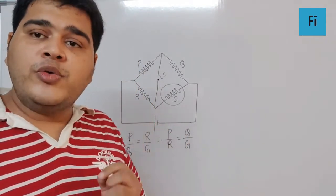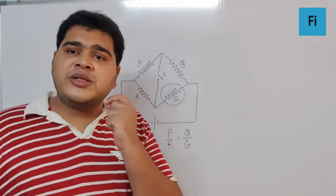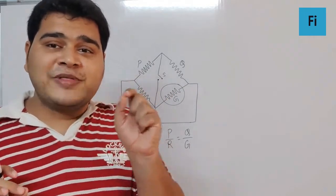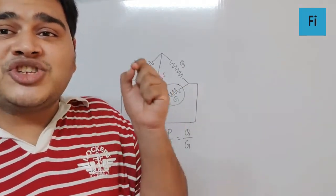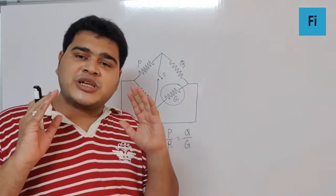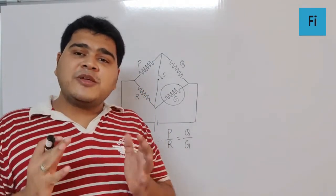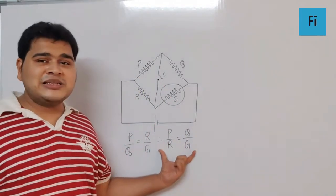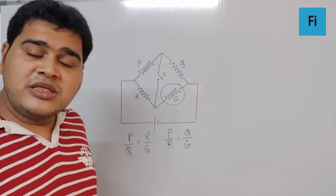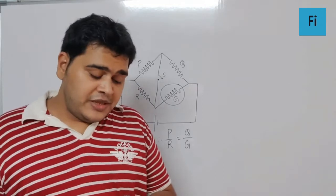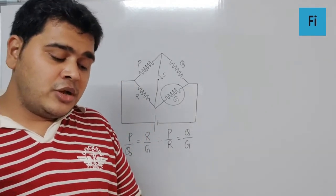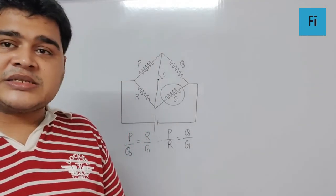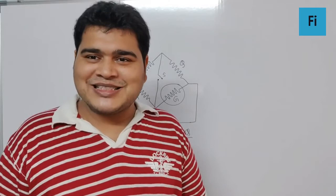The galvanometer will show no change in deflection. Please remember this: no deflection versus no change in deflection. The answer out of the given options is: the galvanometer shows no change in deflection whether switch S is open or closed. I hope that is clear to you.